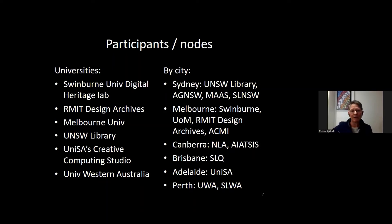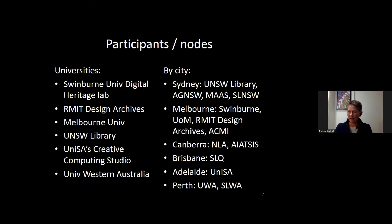This will be a major national facility with 15 nodes across six cities and states. In reality, it's going to be more than that, because some partners have offices in each state. For instance, IATSIS — the Australian Institute for Aboriginal and Torres Strait Islander Studies — are around the country, as are National Archives.